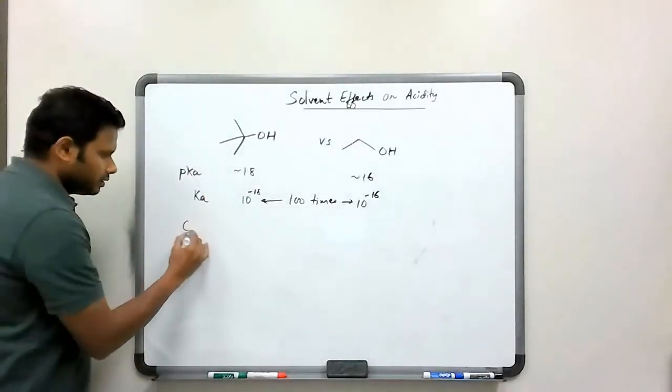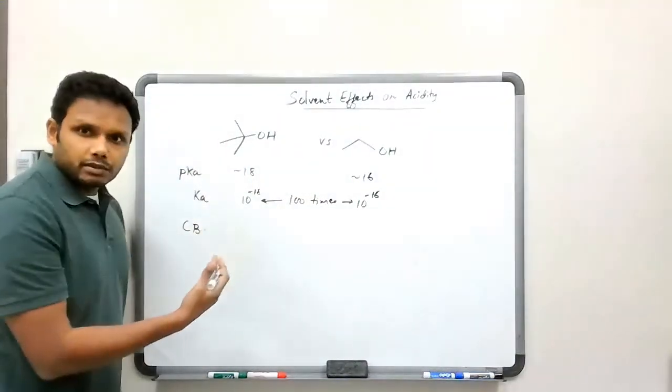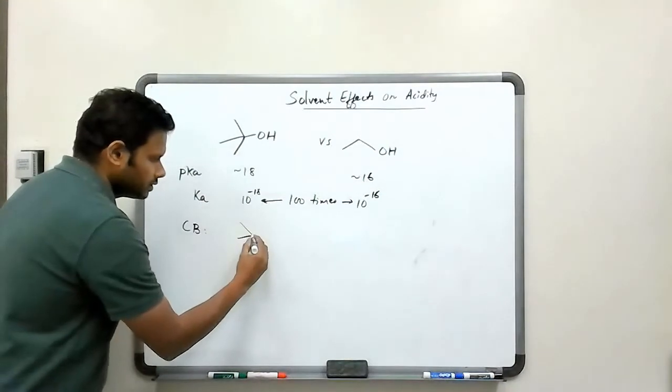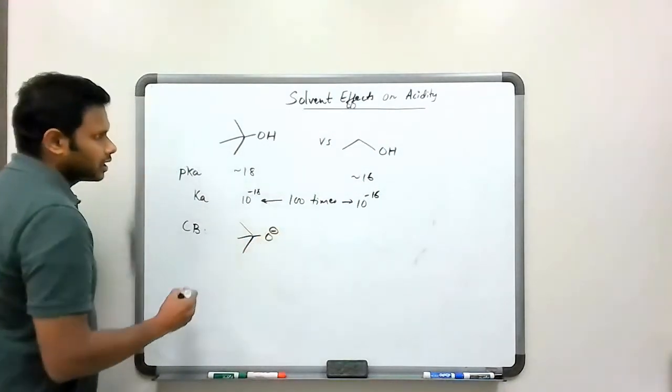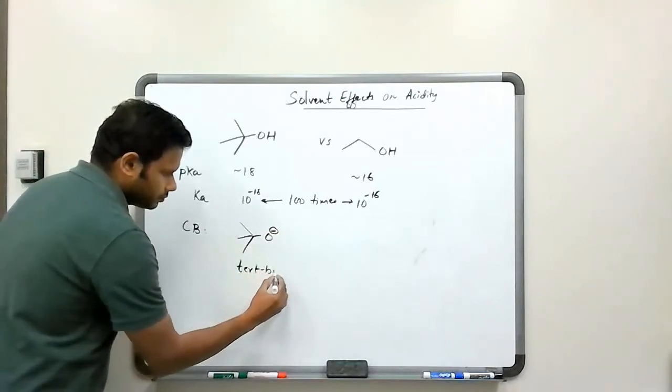And so, again, the answer must be the stability of the conjugate base. So let's go ahead and draw the conjugate base for each of these compounds, and we get this ion here, which is a tert-butoxide.